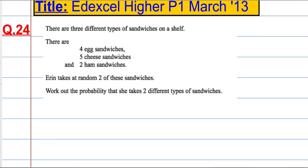Question 24. There are three different types of sandwiches on a shelf: four egg sandwiches, five cheese sandwiches, and two ham sandwiches. Erin takes at random two of these sandwiches. Work out the probability that she takes two different types of sandwich.